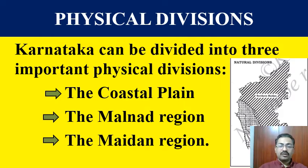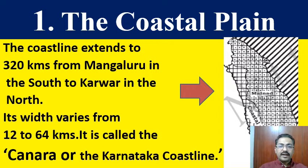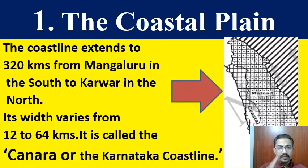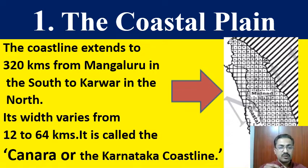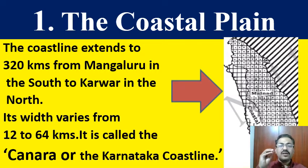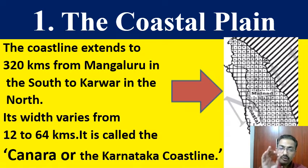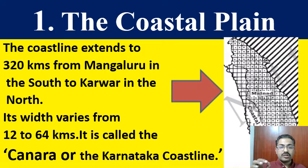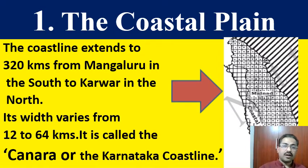This lesson is very simple and small to understand. First of all, let us know about the coastal plain. The coastal line extends to about 320 kilometers, right from Mangaluru in the south to Karwar in the north. We have many beaches, fishing ports, and major ports here. The coastal plain's width ranges from 12 kilometers to 64 kilometers. This coastal plain of Karnataka is called by two different names: one is the Kenara Coast, and the other is the Karnataka Coastal Line.